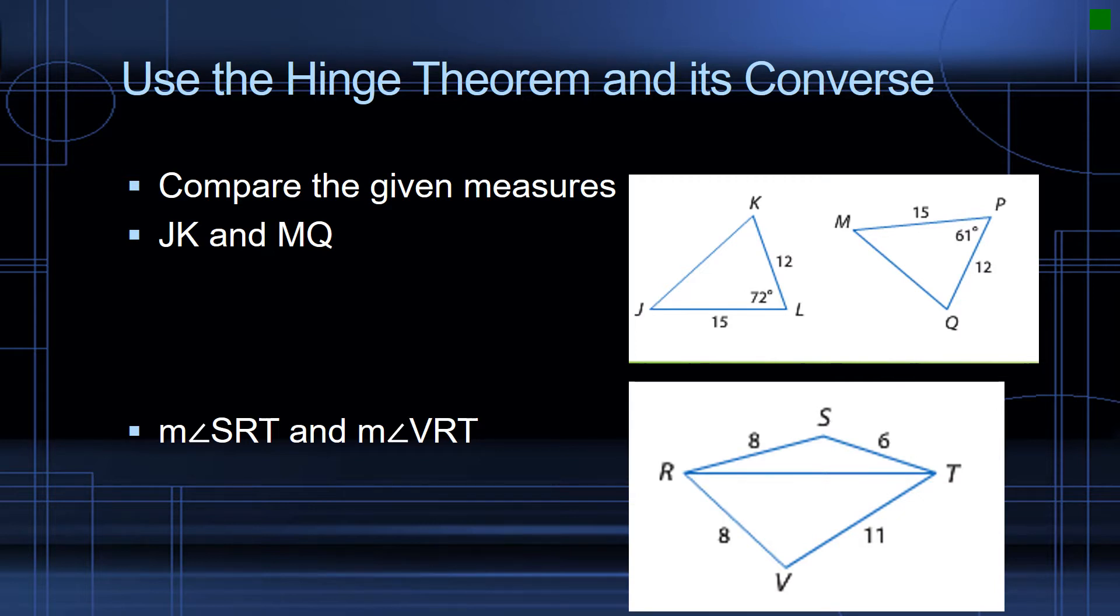So here we've got a couple of examples. This comes from example one, which is on page 371 and then over on page 372 in the textbook. We're simply being asked to compare the given measures. First we've got these two triangles right here, and we're asked to compare the measures of JK and MQ.